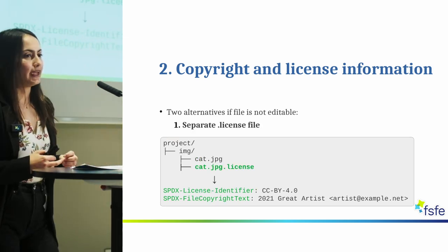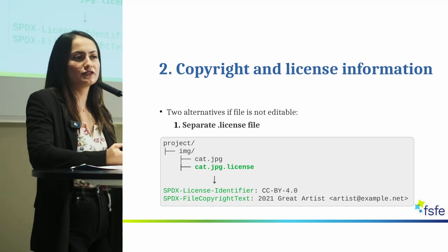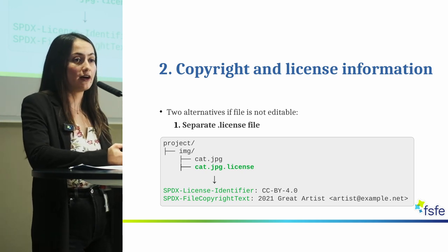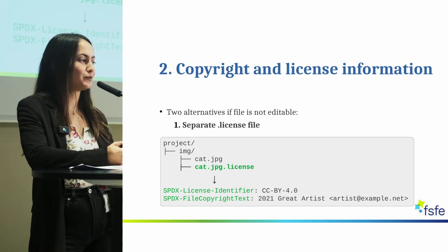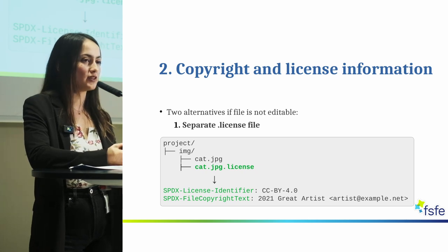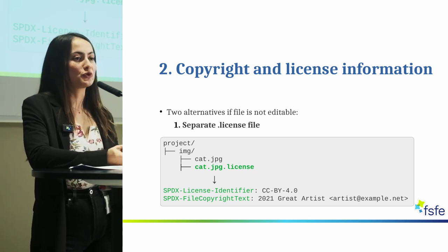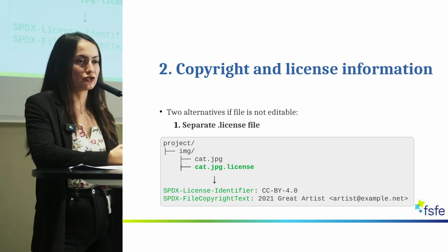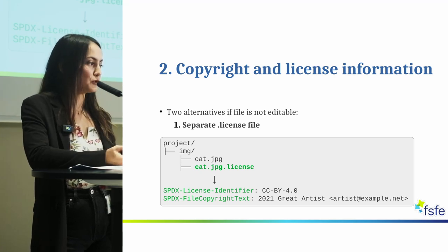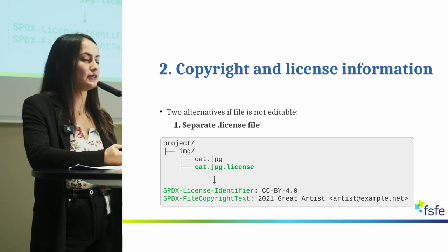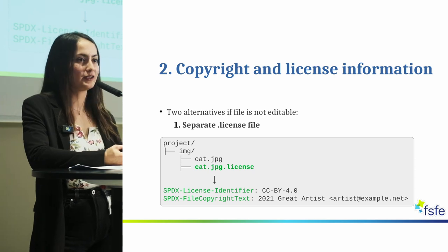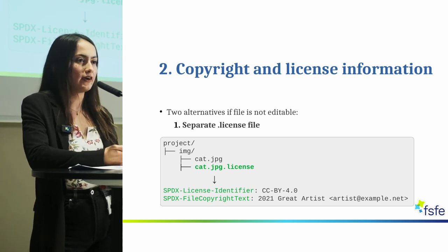You might be wondering: what about files that you cannot edit, such as binary files, image files, or JSON files? For this we have two alternatives. First, a separate .license file in which we store this information. So in this case we have the picture of a cat, and then we create a .license file which includes the license identifier as well as the copyright text. Whenever we go to the image directory and see the picture, we can go to the text file and find this legal information.